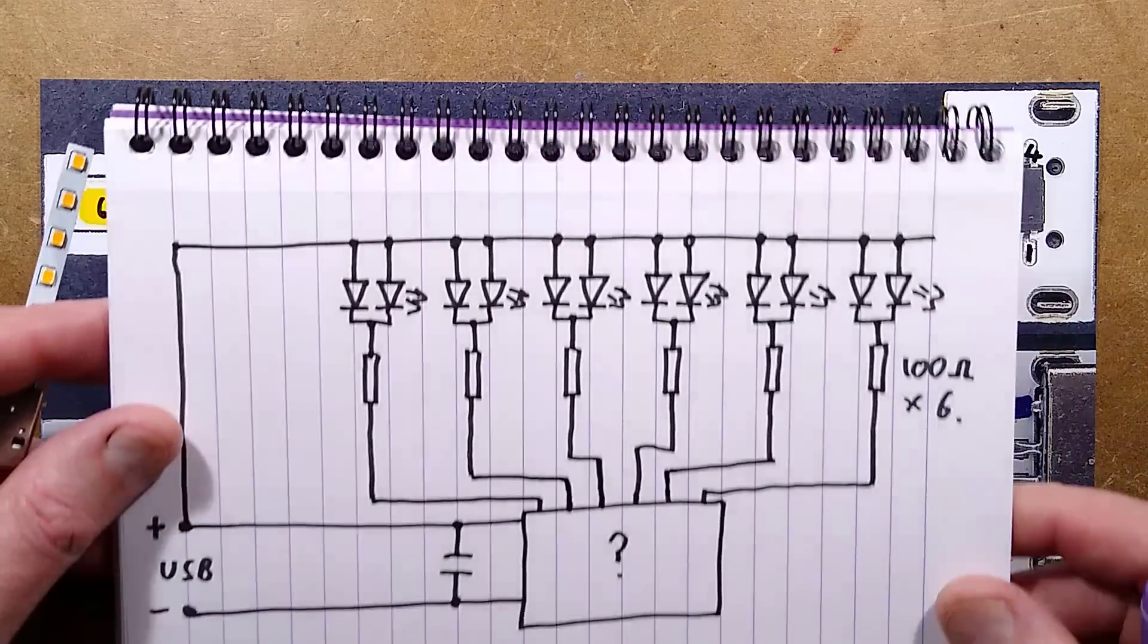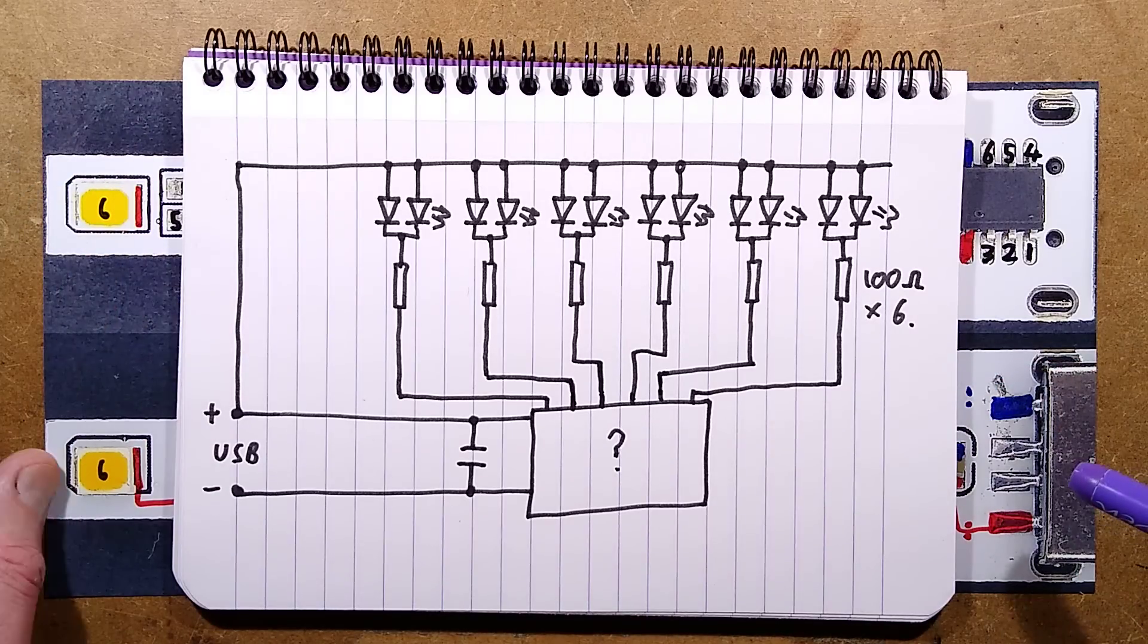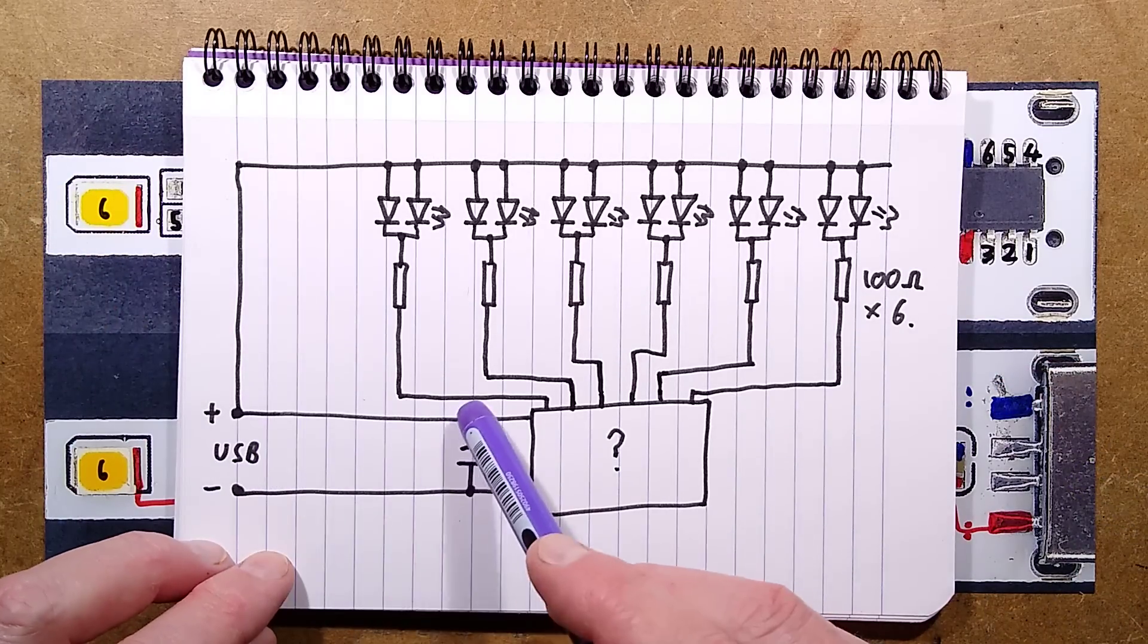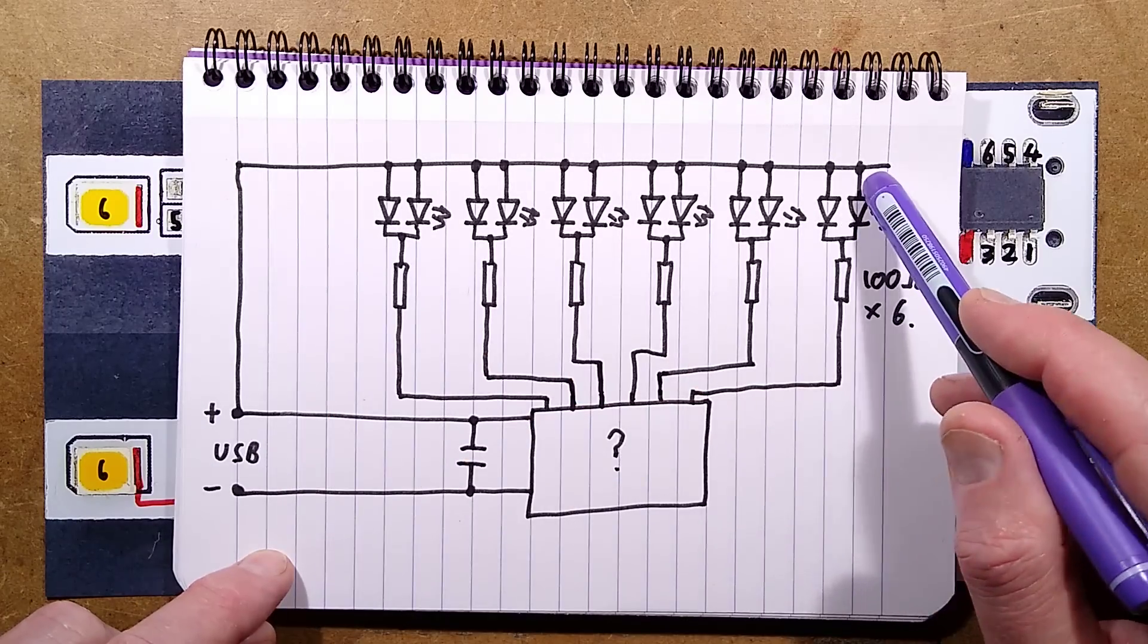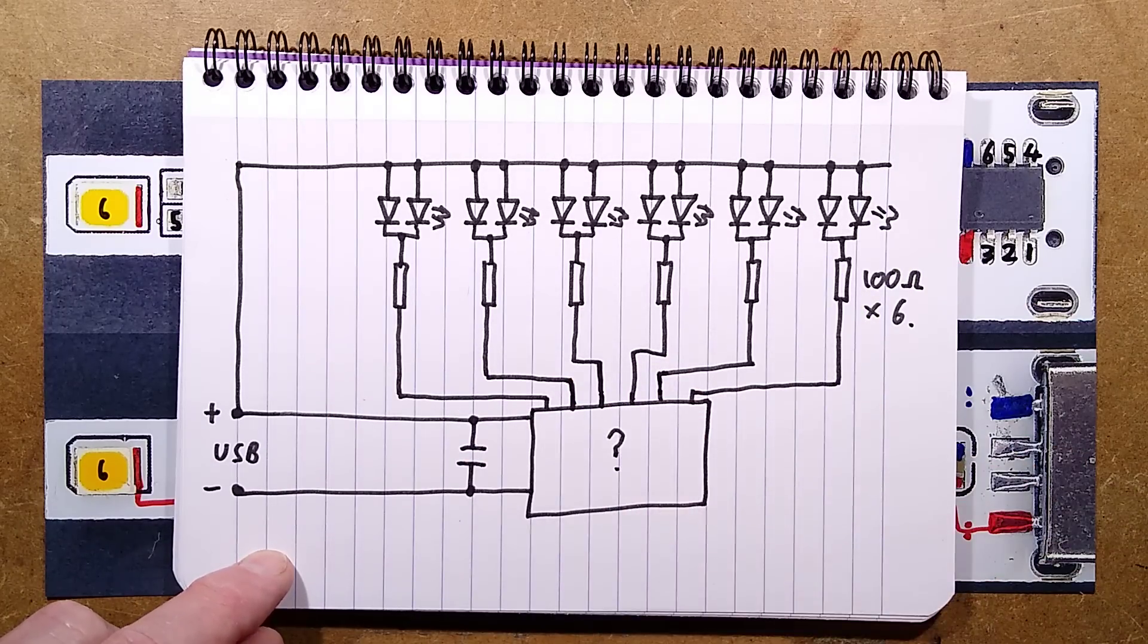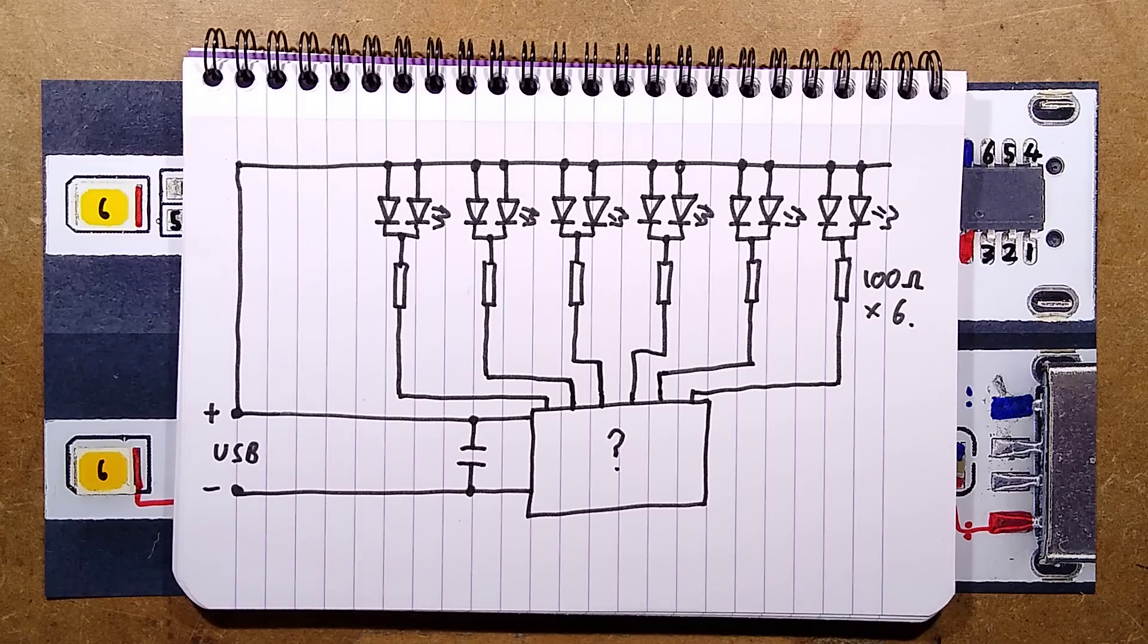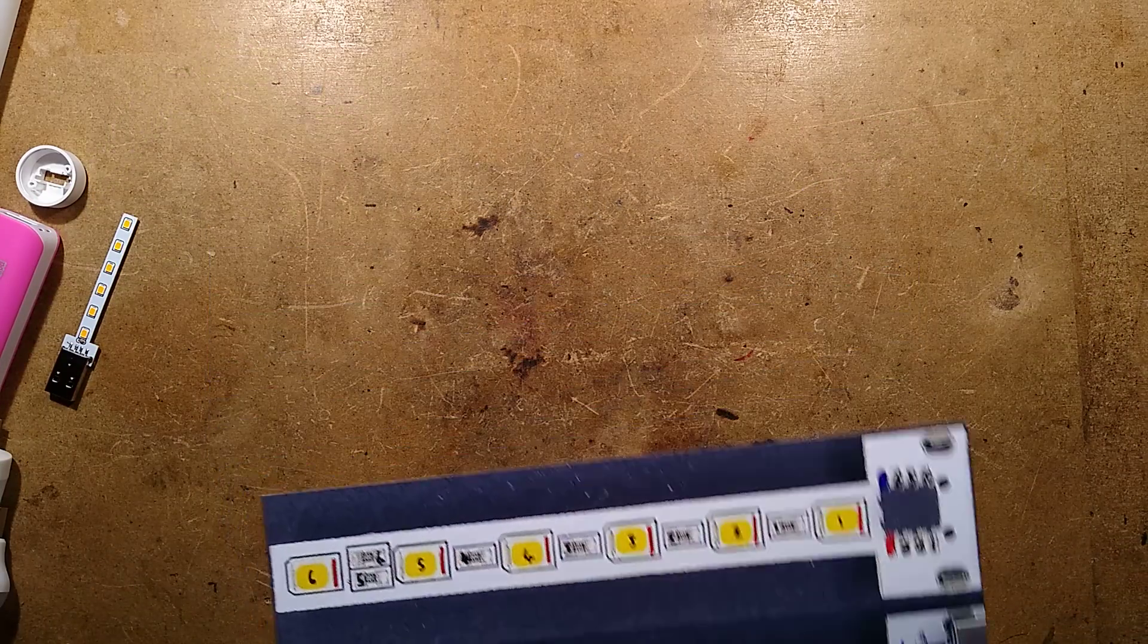Here's the schematic. You have the USB supply going straight to that capacitor and then the chip. You have the positive going up feeding along all the LEDs, and then each one has a 100 ohm resistor going to its own pin in the chip. And that is it.